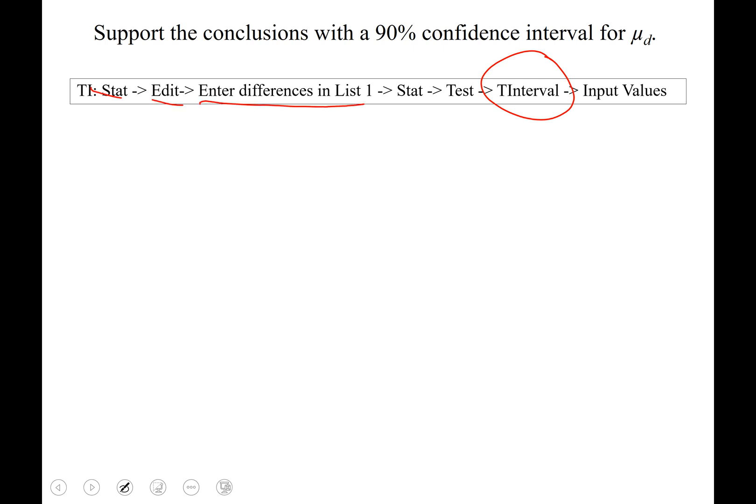and enter the differences into list one. Stat, test, and then you will be caught up to me, t interval. I am going to run this off of data. Mine is in list one, frequency of one, confidence level 0.90.